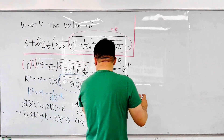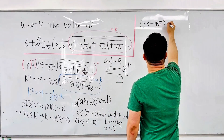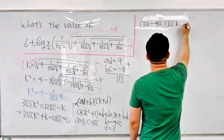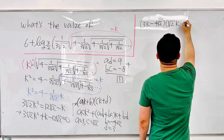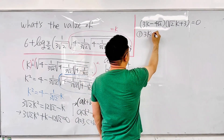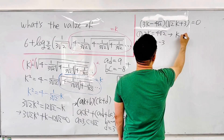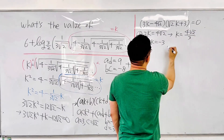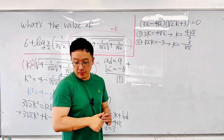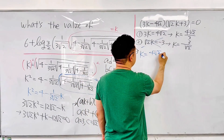So the factored form is (3K − 4√2)(√2·K + 3) = 0. This gives two cases: Case 1: 3K = 4√2, so K = 4√2/3. Case 2: √2·K = −3, so K = −3/√2. Since K must be positive, Case 2 is rejected. Therefore K = 4√2/3.